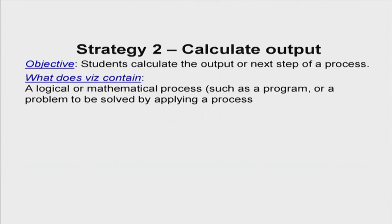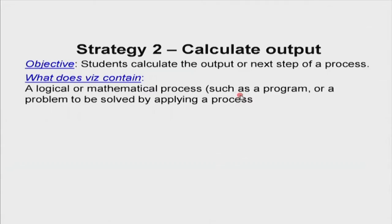Moving on to the next strategy — similar but focused on more mathematical problems — we are calling this strategy 'calculate output.' The learning objective is that students should be able to calculate the output or next step of a process or problem. For example, a computer program is running step by step and students should be able to say what happens at the next step. This is a very good strategy to use while doing mathematical problem solving with visualization.